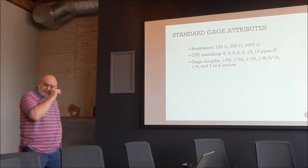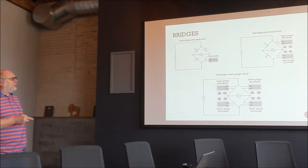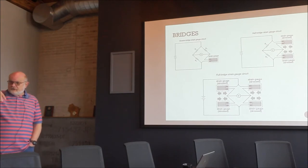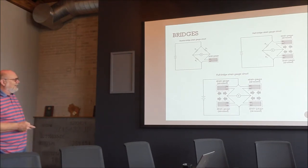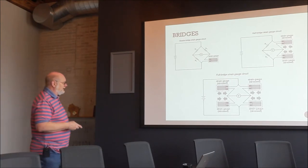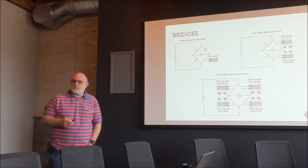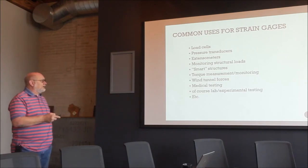The Wheatstone bridge configurations: a quarter bridge has one active strain gauge; a half bridge doubles the output with gauges in tension and compression on both sides; a full bridge puts tension and compression in opposite legs. At Battelle they once built a 32-arm bridge — instead of one, two, or four arms, every arm of the Wheatstone bridge had eight gauges to cancel bending and all other effects.